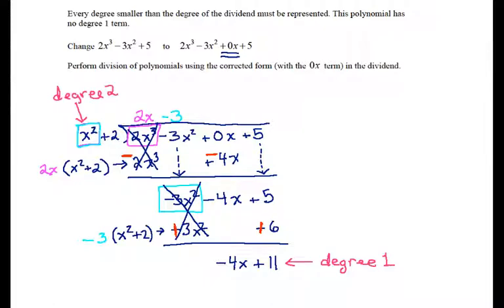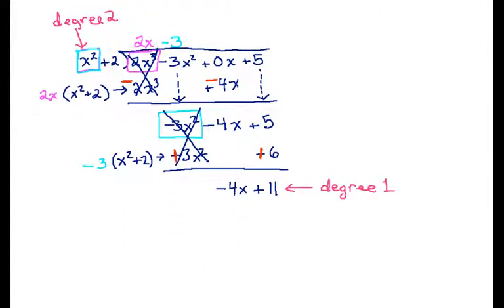So the result is a degree that's strictly less than the degree of the divisor, which means it's time to stop and call this the remainder.